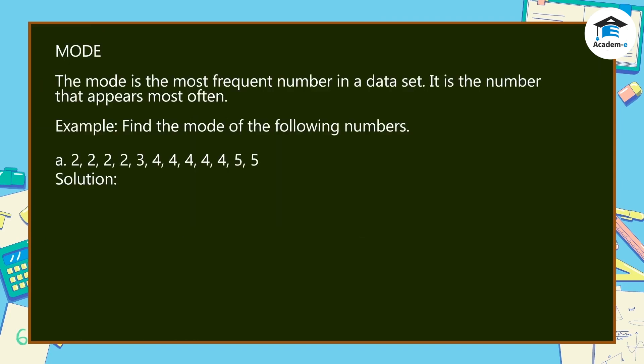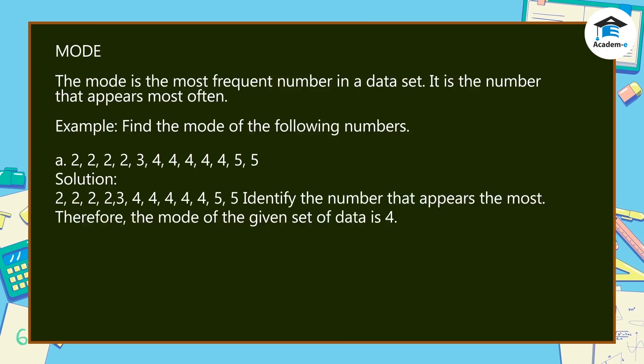Mode: the mode is the most frequent number in a data set. It is the number that appears most often. Example: find the mode of the given numbers. To solve, identify the number that appears the most.